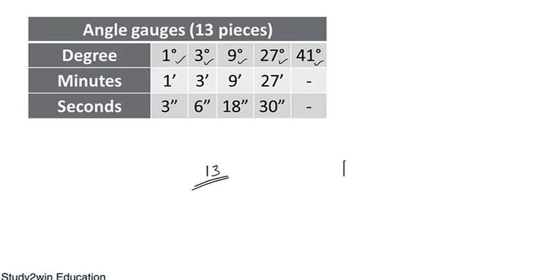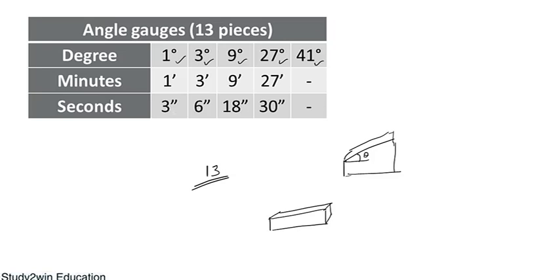An angle gauge looks like a tapered block with angle theta. For very small angles like 3 seconds, the gauge looks almost like a flat block and it is difficult to tell which side has the taper. That is why two signs are provided on the angle gauge — a minus sign always on the lower side of the angle and a plus sign always on the higher side. This makes it easier to detect which side has the taper or slope.